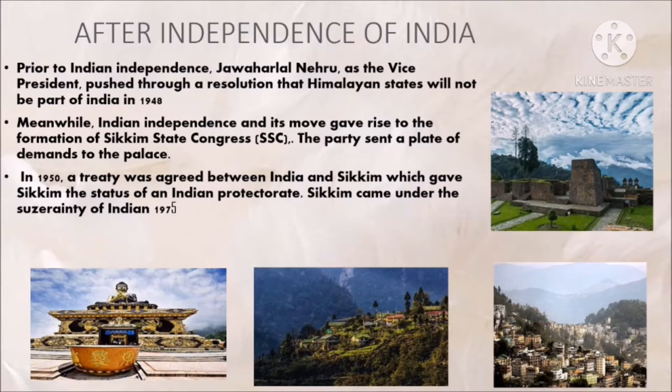Meanwhile, Indian independence spurred a fledgling political movement in Sikkim, giving rise to the formation of the Sikkim State Congress. This party sent a plate of demands to the palace, including a demand for accession to India. In 1950, a treaty was agreed between India and Sikkim which gave Sikkim the status of a protectorate. Sikkim came under the suzerainty of India in 1975. Thank you.